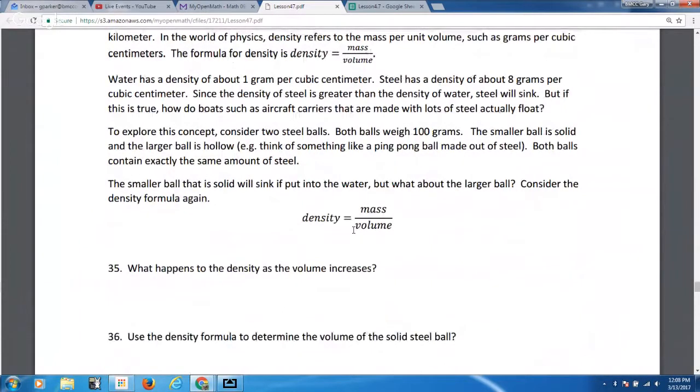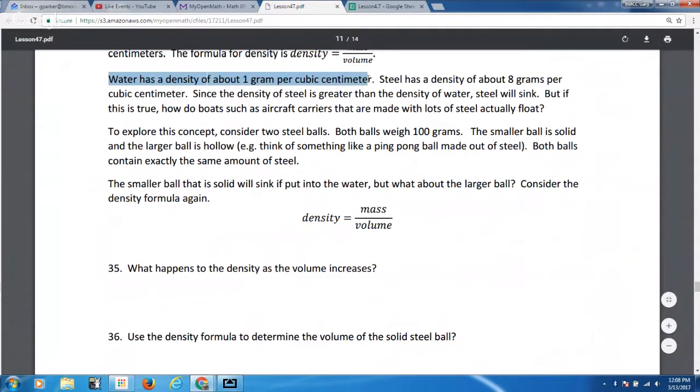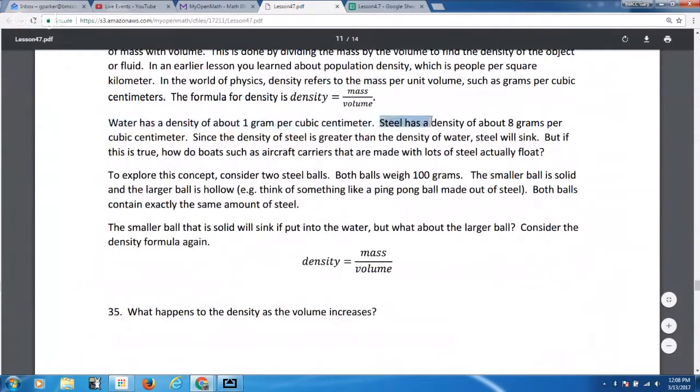We have this relationship here that density is equal to mass over volume. We're going to play around with that a little bit on paper and on a spreadsheet. Some things that are going to be important to us: density equals mass over volume. Water has a density of about one gram per cubic centimeter. Steel has a density of about eight grams per cubic centimeter. We're going to take a look at some balls, a solid one and a hollow one, both made up of 100 grams of material. Grams are a measure of mass, not a measure of weight.